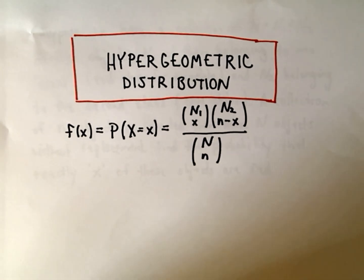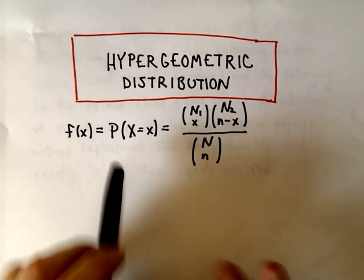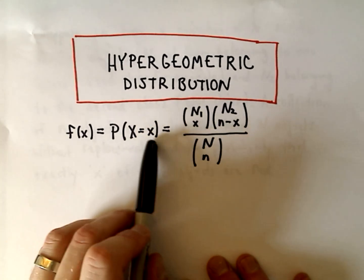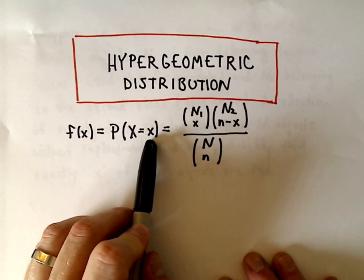In this video I want to do an example of what's known as the hypergeometric distribution. It basically says the probability of you selecting x objects of a certain type.